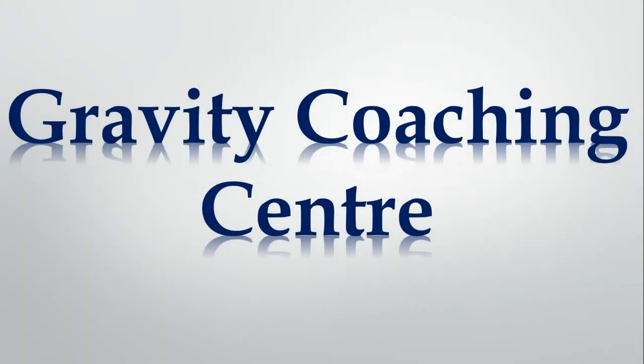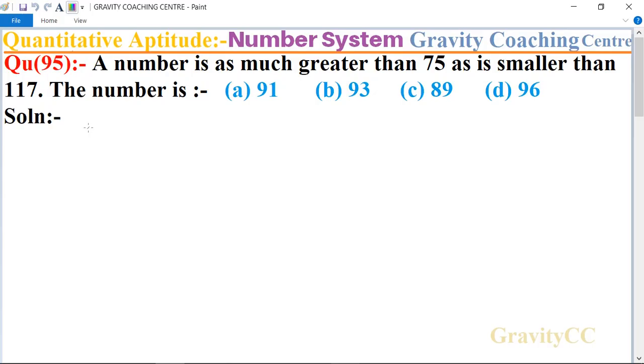Welcome to our channel Gravity Coaching Center, quantitative aptitude, chapter number system, question number 95. A number is as much greater than 75 as is smaller than 117. So the number is?